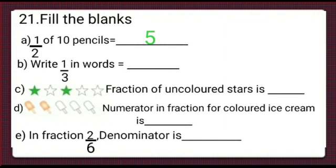Now, moving to part b, write 1 by 3 in words. 1 by 3 means dividing 1 whole into 3 equal parts and it is 1 out of 3 parts, that is 1 third. So, we will write here 1 third in words.